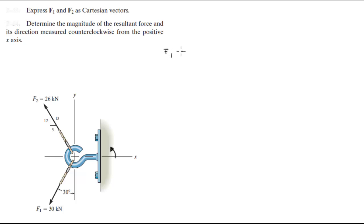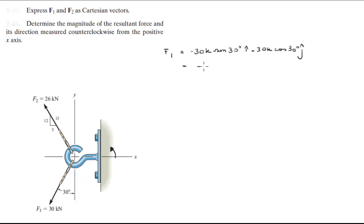F1 is equal to negative 30k sine of 30 degrees i minus 30k cosine of 30 degrees j. When you calculate this, you get that it's equal to negative 15k in the i-direction minus 25.98k in the j-direction.